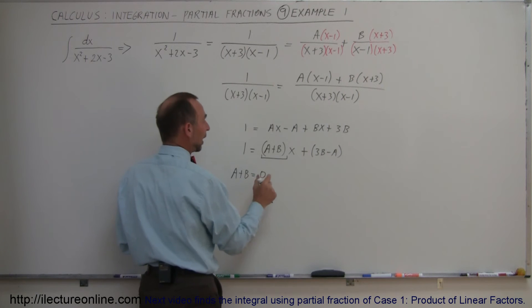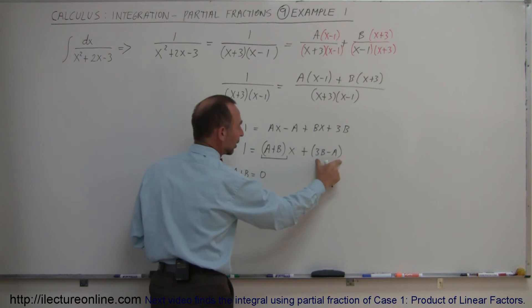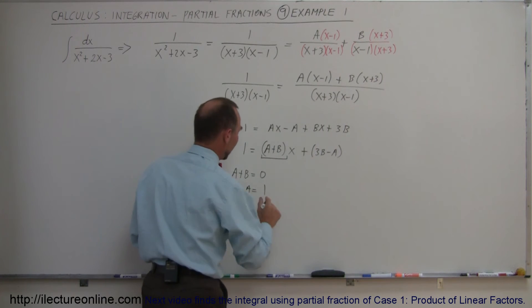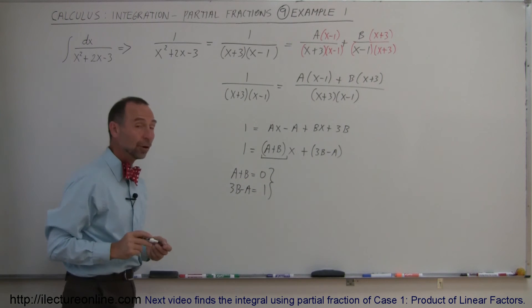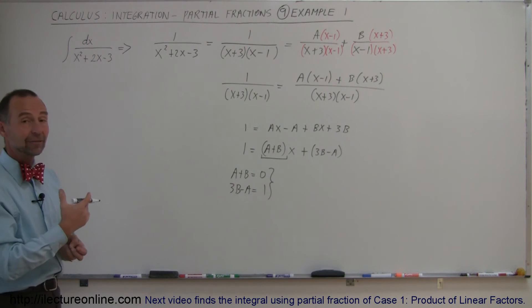On the constant, however, I know I have a constant right here, and I have a constant here. That means 1 must equal what this is equal to. So I can write that 3B minus A must equal 1. And so now I have two equations and two unknowns, which I'm able now to solve simultaneously, and that will allow me to find the values for A and B.